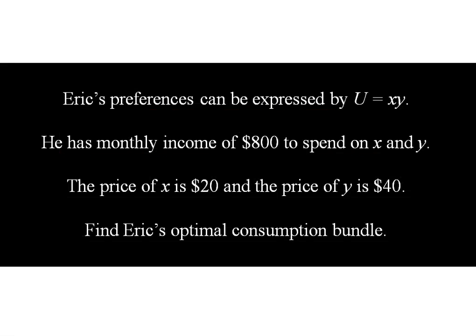Eric's preferences can be expressed by utility equals x times y. He's got a monthly income of $800 that he can spend on x and y. The price of x is $20 per unit and the price of y is $40 per unit. Let's find Eric's optimal consumption bundle.